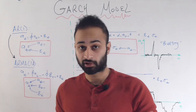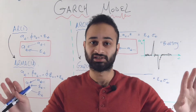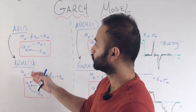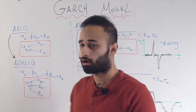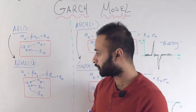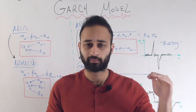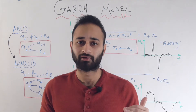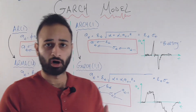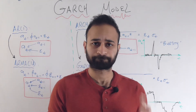So the way we're going to understand the GARCH model — to make it easiest on us — is by starting from the relationship between the AR-1 model and the ARMA-11 model, because that's going to be a very similar logical jump to going from the ARCH-1 model to the GARCH-11 model. And that'll make our lives a lot easier.